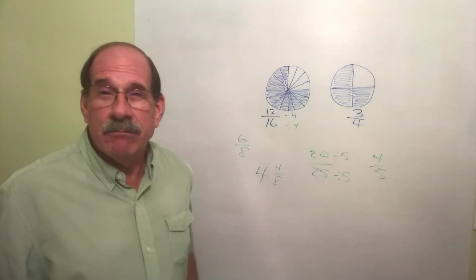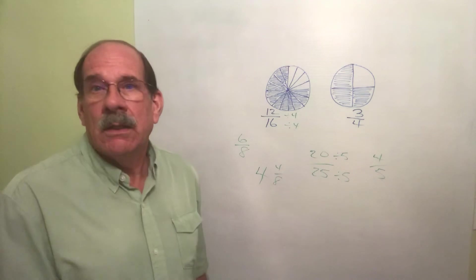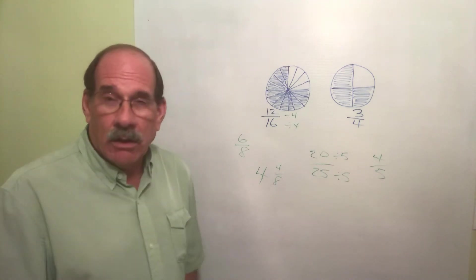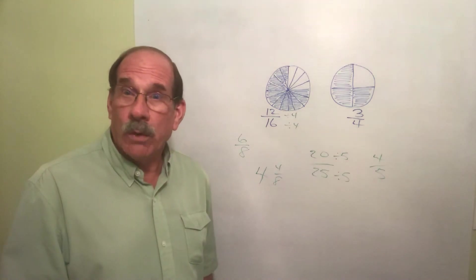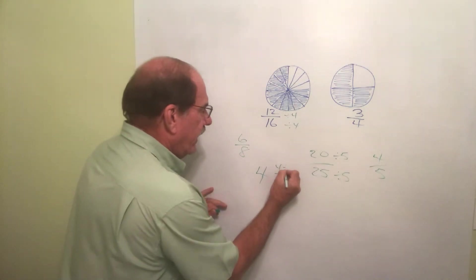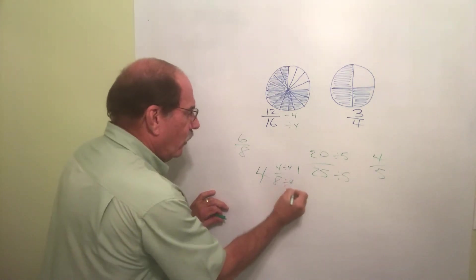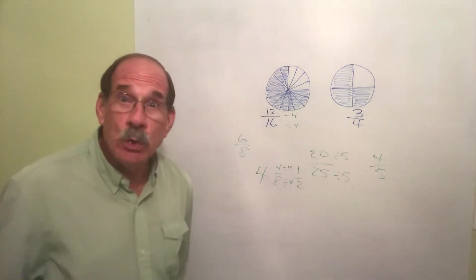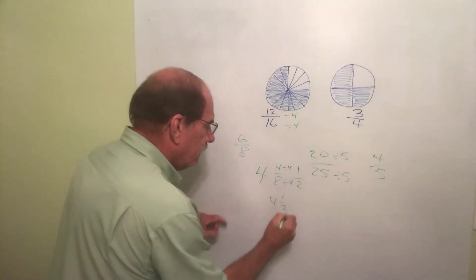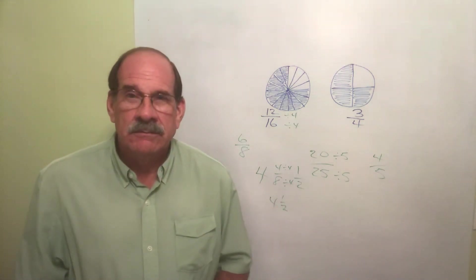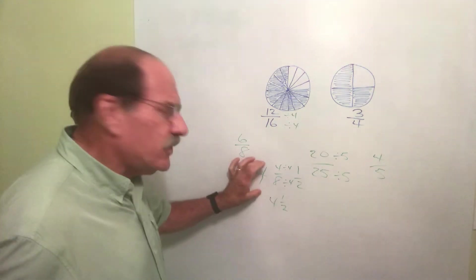What's the largest number I can divide both those by? 4. So 4 divided by 4 is 1, 8 divided by 4 is 2. So the answer is 4 and 1/2. That's reduced to lowest terms. Reducing - you don't mess with the whole number, just the fraction portion.